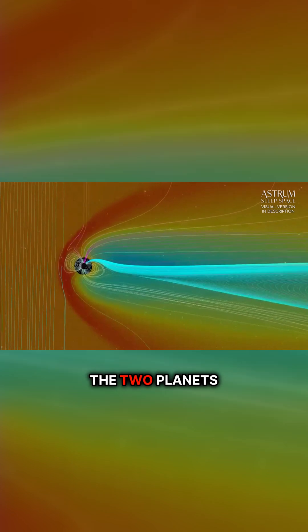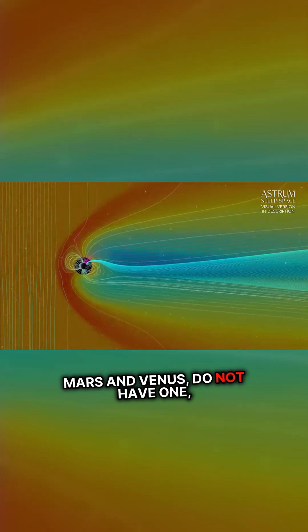It's not a given that our planet would have a magnetic field. The two planets flanking us, Mars and Venus, do not have one.